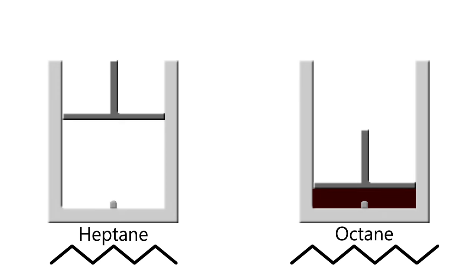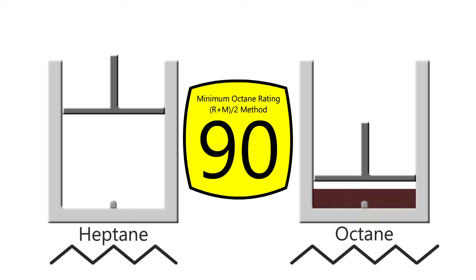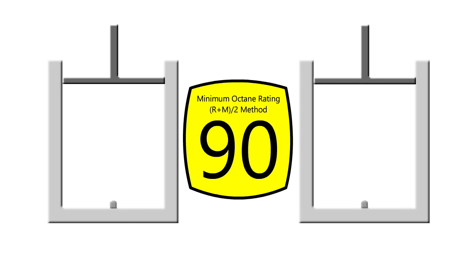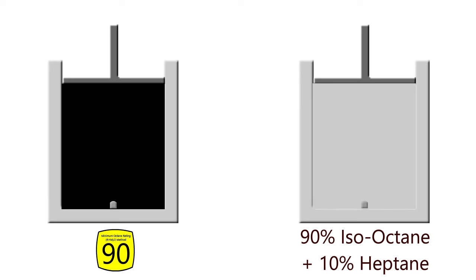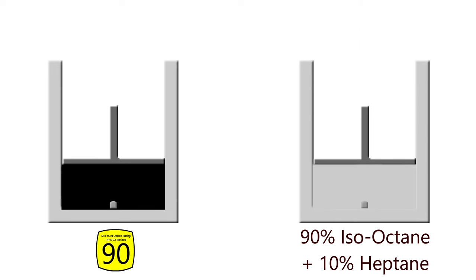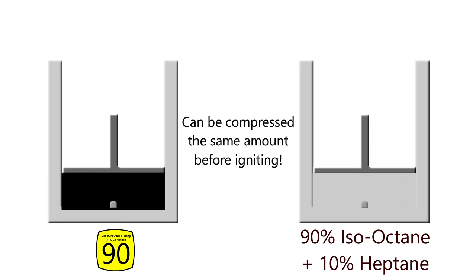These characteristics led to the octane rating given to fuel at a gas pump. Gasoline's capacity to resist spontaneous ignition upon compression is compared to the capacity of a standard mixture of heptane and isooctane. For example, gasoline with an octane rating of 90 is able to resist ignition upon compression, as well as a mixture of 90% isooctane and 10% heptane can resist ignition.